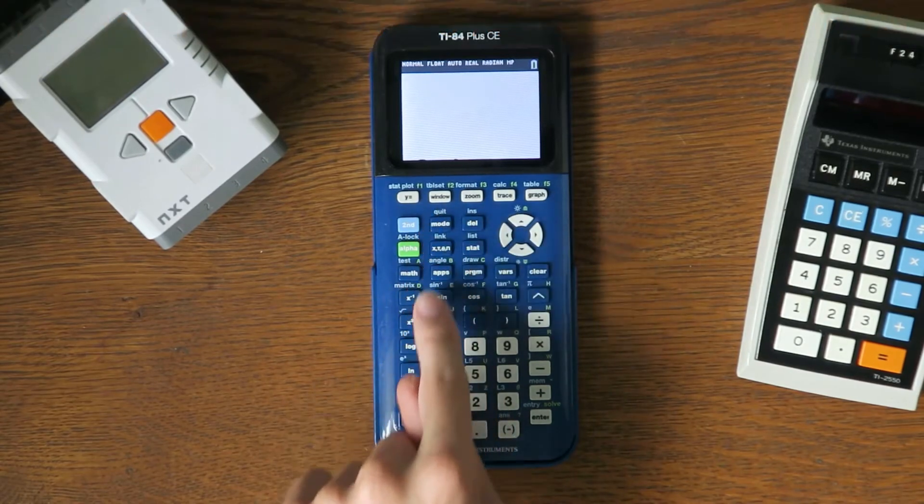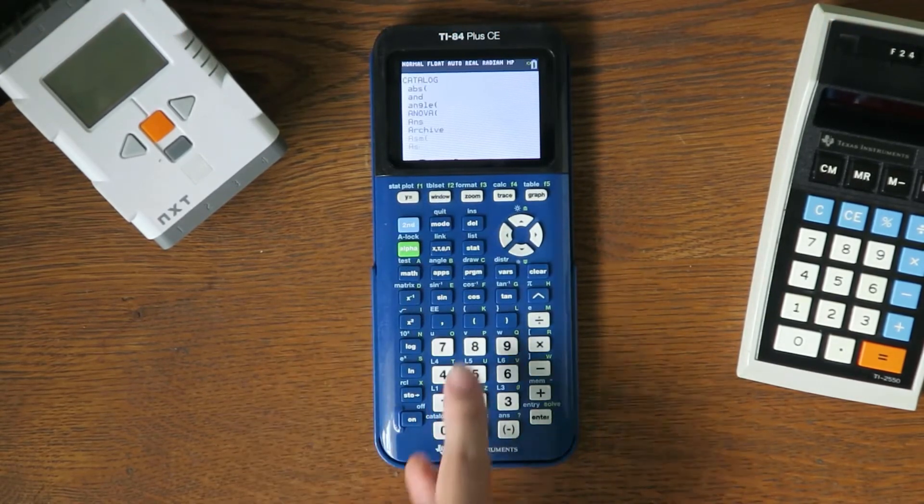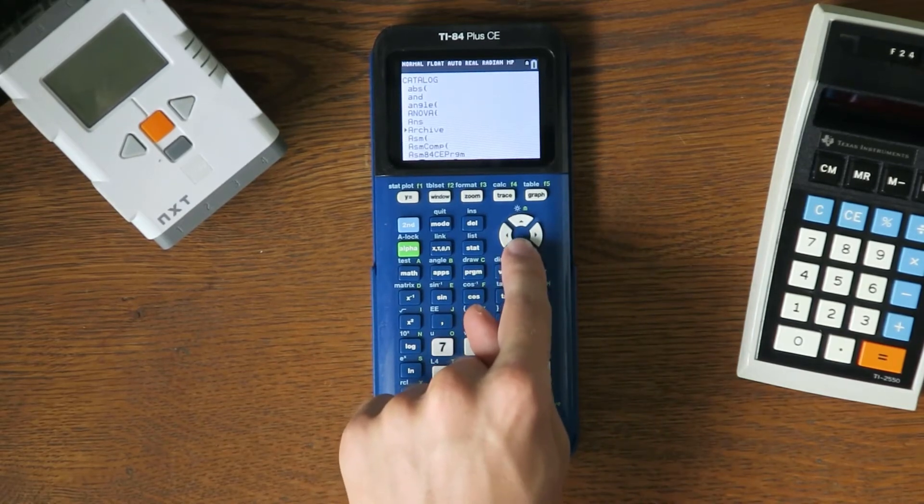Press second, then quit. Now press second, then zero, then scroll down to ASMCOMP and press enter.